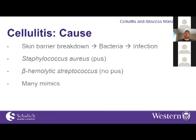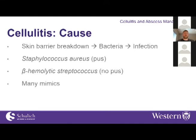Cellulitis typically starts with skin barrier breakdown — often microscopic — allowing skin flora bacteria to enter, causing inflammation of the dermis and subcutaneous tissue. Often the infection clears within 12 hours and only the inflammatory response remains. There are two types: purulent cellulitis caused by staph aureus, presenting with purulence or an underlying abscess, and non-purulent cellulitis typically caused by beta-hemolytic streptococcus with no purulent drainage. Other causes like gram negatives are rare.